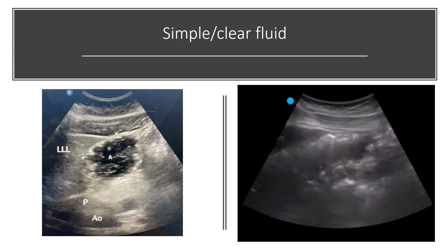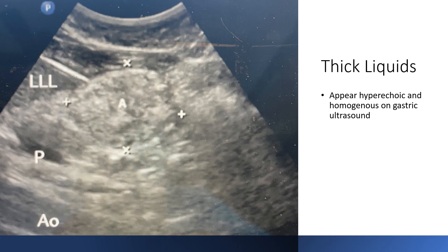We'll discuss gastric volume estimation shortly. For thick liquids, you'll see an enlarged antrum that appears hyperechoic and homogeneous on ultrasound — something like yogurt would produce this appearance.